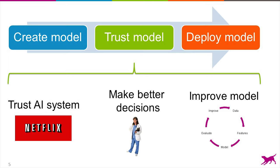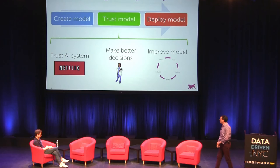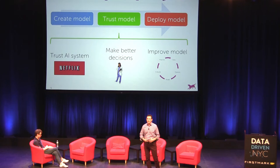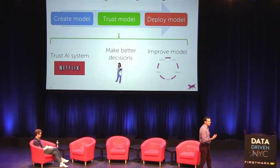But understanding why a machine learning model makes a particular decision is fundamentally important beyond recommendations. Take a system that a doctor can use. If the system says the probability that this patient has cancer is 90%, a doctor would typically ignore that system because she doesn't trust it. But if she sees 'look at this MRI, look at this latest study, look at these related cases, and that's why I'm predicting cancer,' then the doctor is much more able to take actionable decisions. And as a data scientist, I really want to understand what's going on so I can improve the performance of my system and figure out ways to make it better.